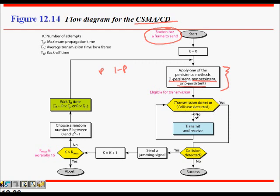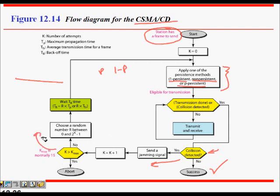While transmitting, the node continuously checks for collision. If transmission completes without collision, it's a success. If collision is detected during transmission, a jamming pulse is sent to the entire Ethernet so other nodes know not to transmit. The attempt counter is incremented. If attempts are less than 15, we try again using exponential backoff; otherwise we abort.